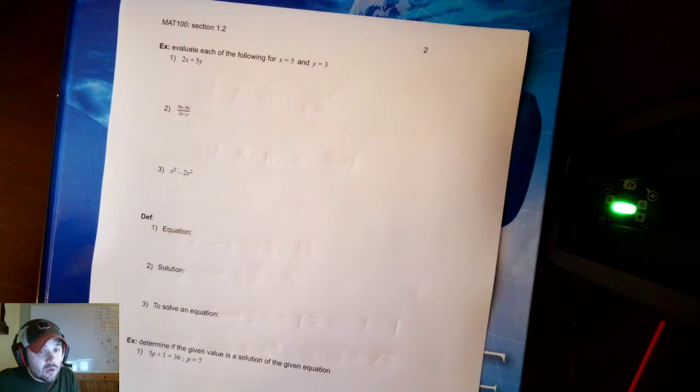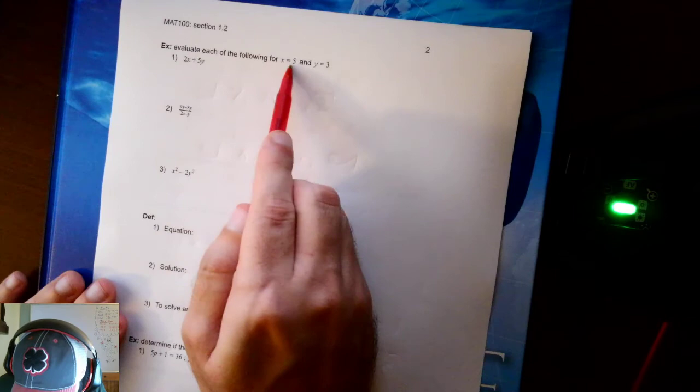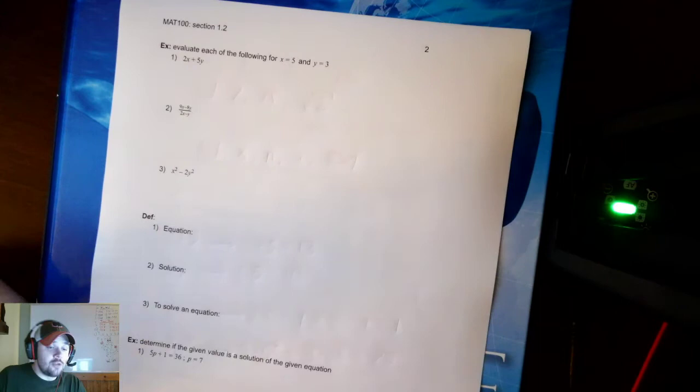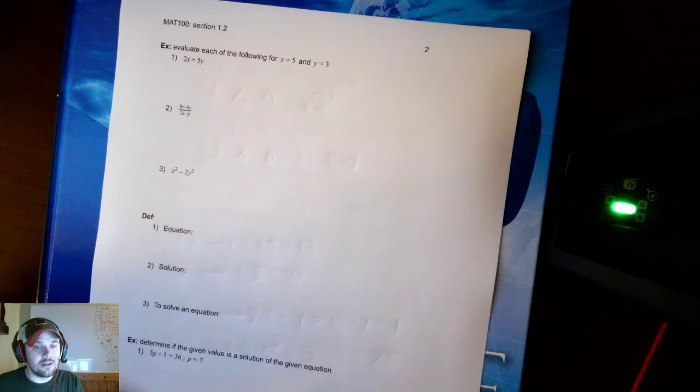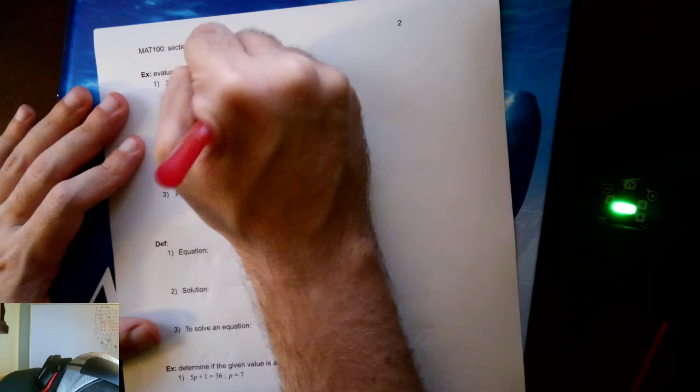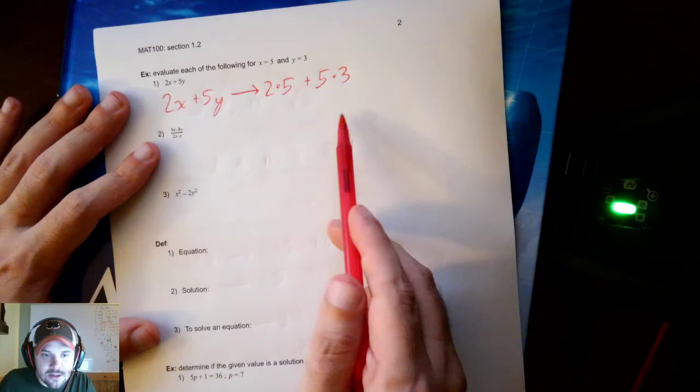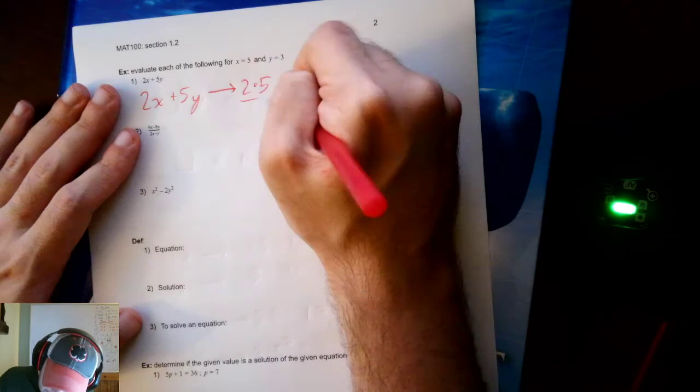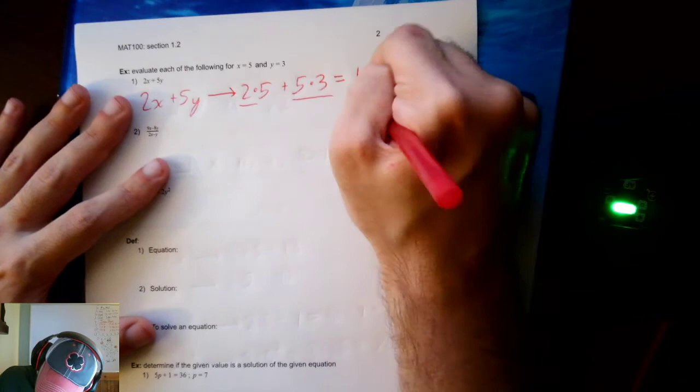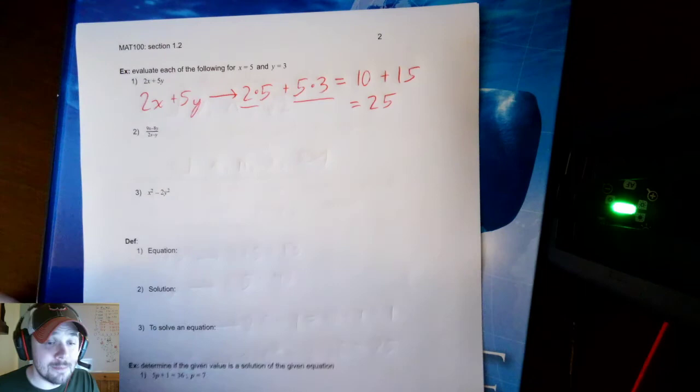Now, what if there's more than one variable? Can we work with more than one variable? This says evaluate each of the following for x equals 5 and y equals 3. Well, when you have two variables, you plug in the value for the appropriate variable into those variables. So, 2x plus 5y. Well, when I plug in 5 for x and 3 for y, x becomes 5, y becomes 3. I get 2 times 5 plus 5 times 3. I need to multiply first. Multiplications come before additions. So I need to multiply to get 10 and 15 before I add them to become 25.